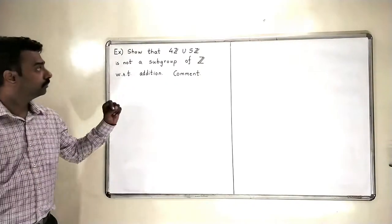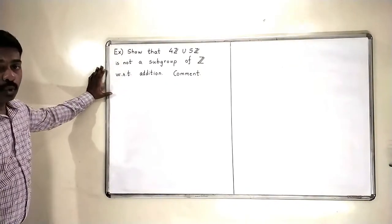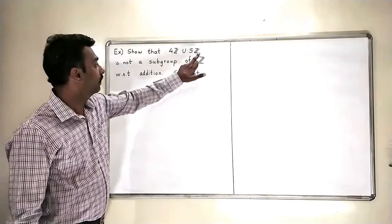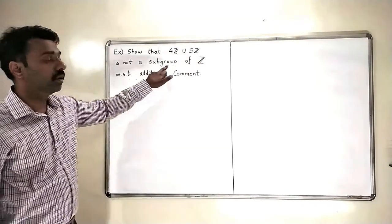Let's go to the next problem now. Now we have to show in this exercise that 4Z union 5Z is not a subgroup of Z.